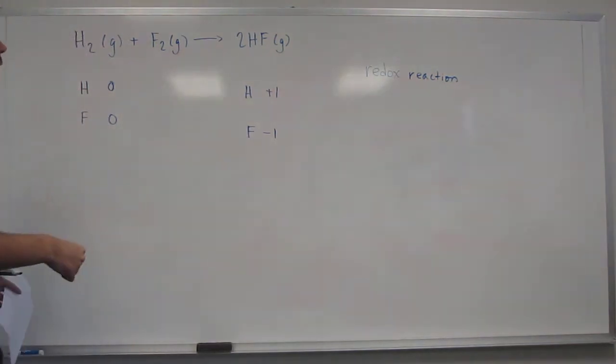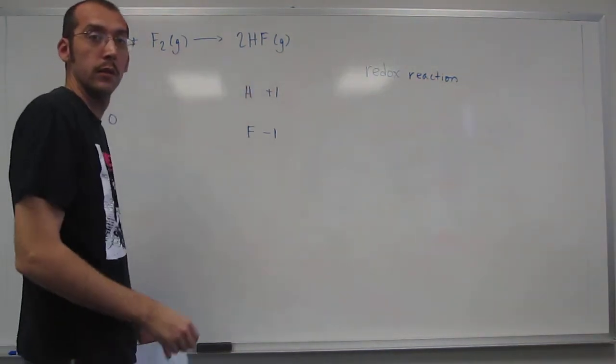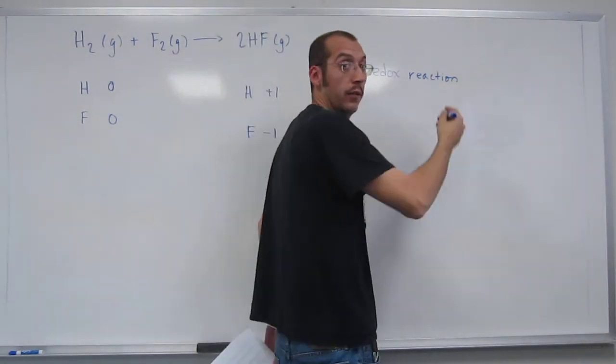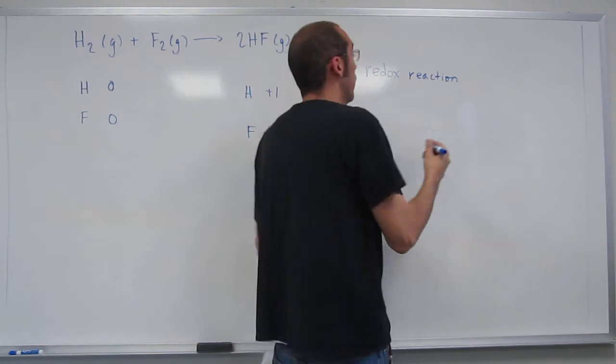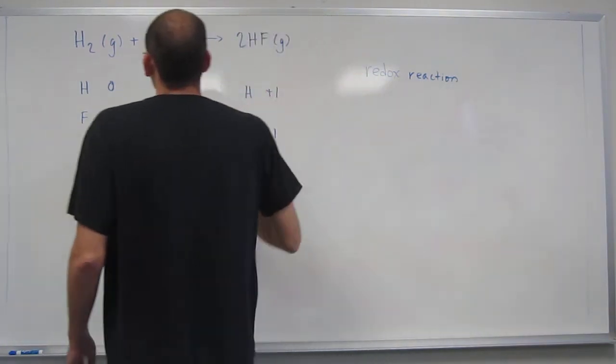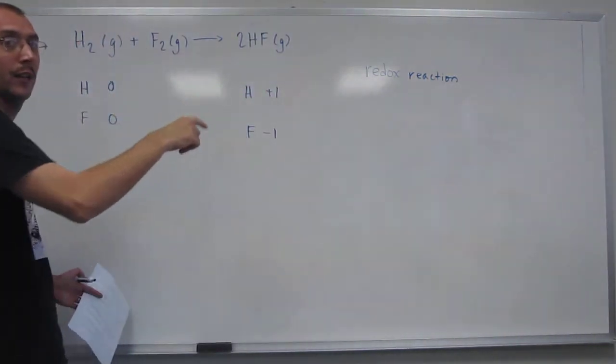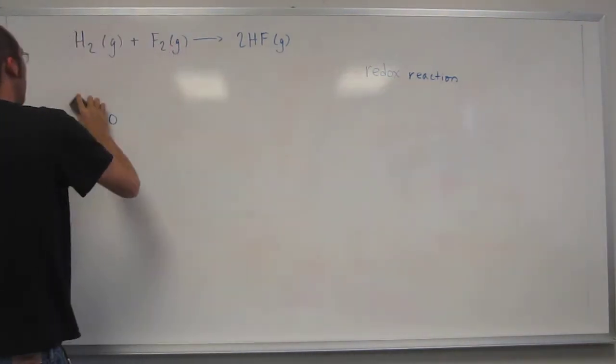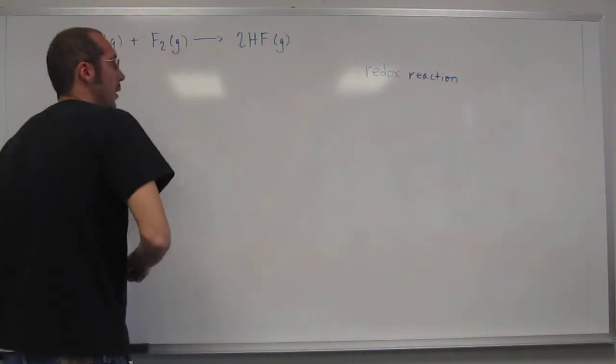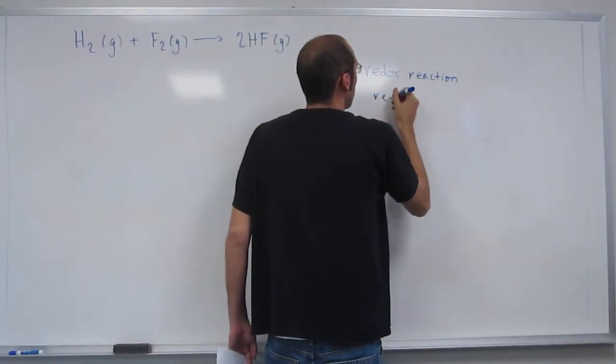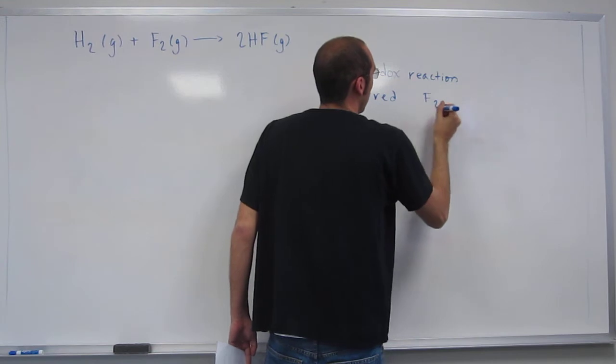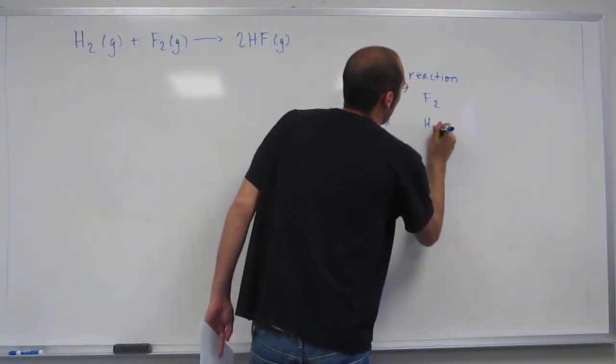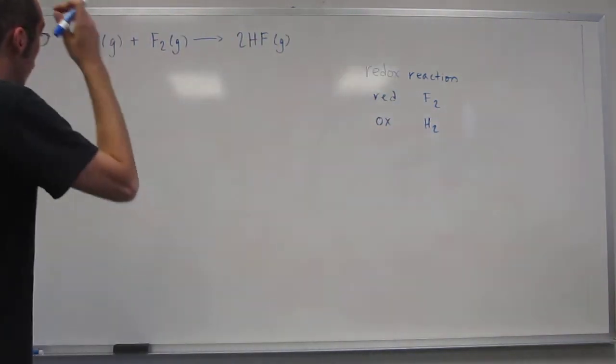If you want to think about it, fluorine got reduced and hydrogen got oxidized. If you want, if it asked you that question, what got reduced, what got oxidized. The thing that got reduced was fluorine because it combined with hydrogen. Remember, that's one of the rules. Okay, so here, let's just write that down for a moment. Reduced fluorine, oxidized hydrogen.